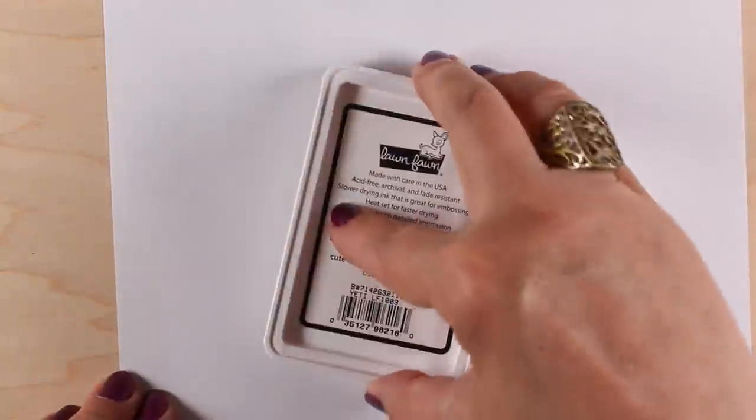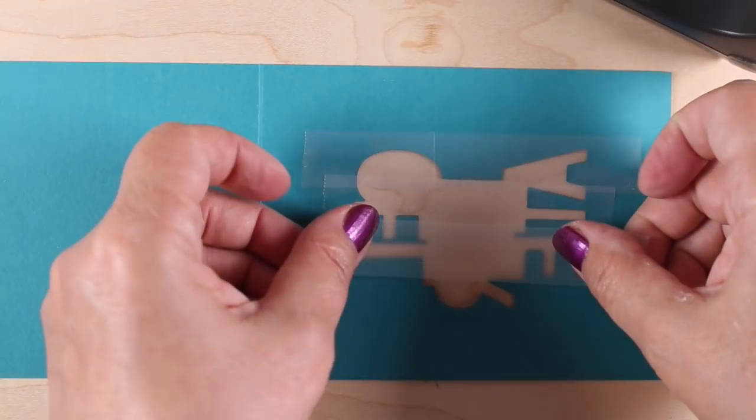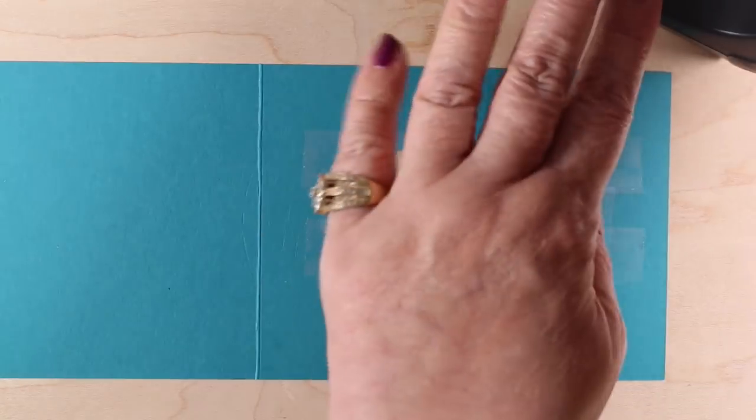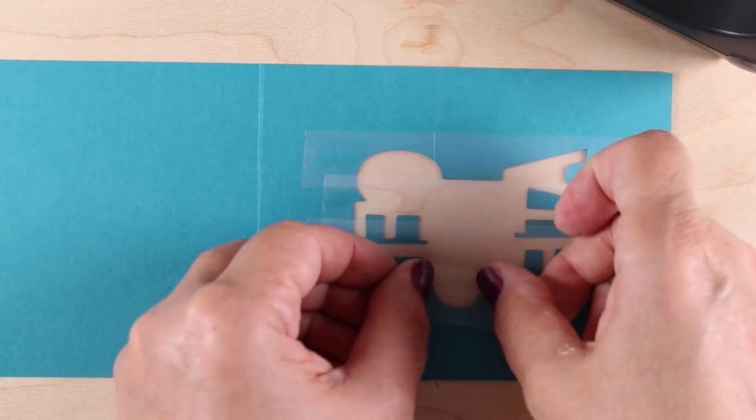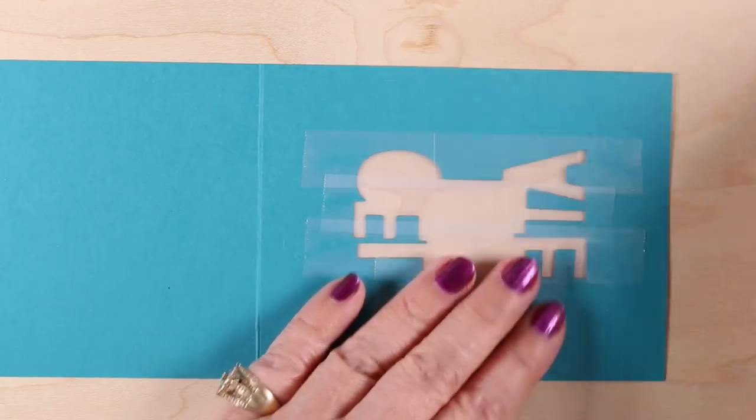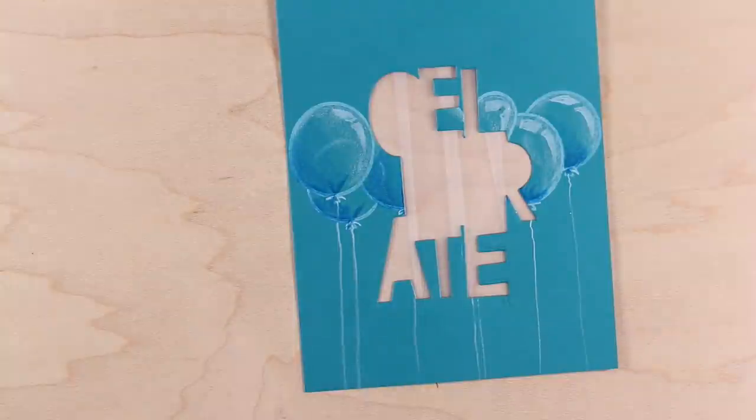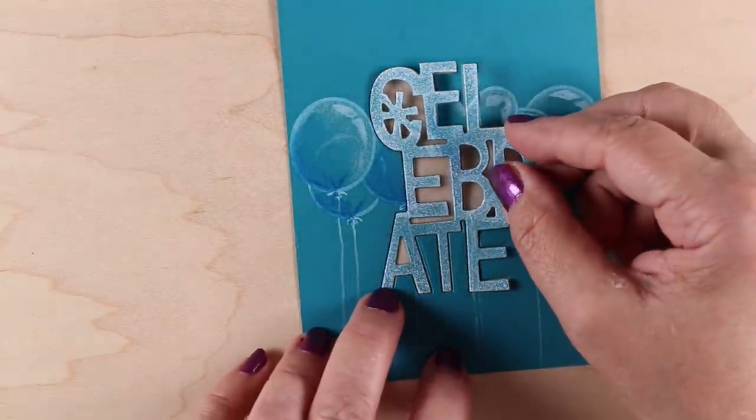So after I die cut it, I wanted it to look different than the rest of it when I replaced it back in here. So I just took an ink pad and smacked it on the surface a few times and you'll see how it changes the color of it so that it stands out on the front. I put some scotch tape on the back. This is like the dummy version of nesting dies in there. Scotch tape is super easy.